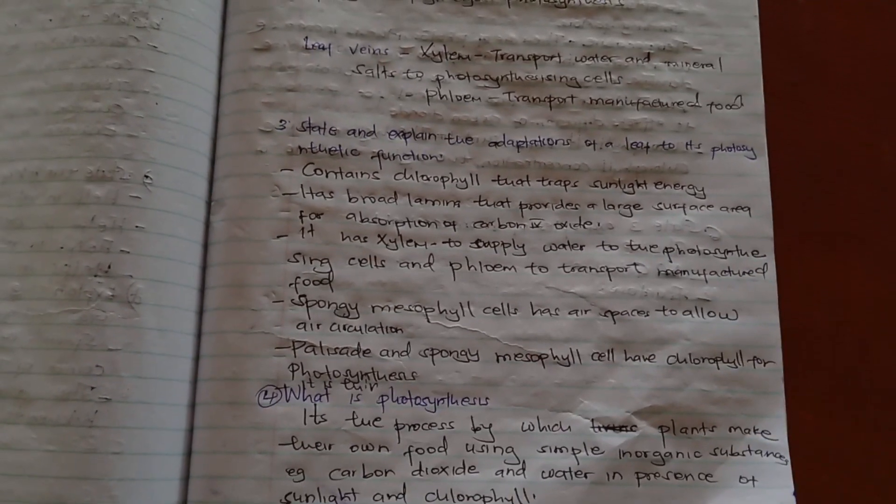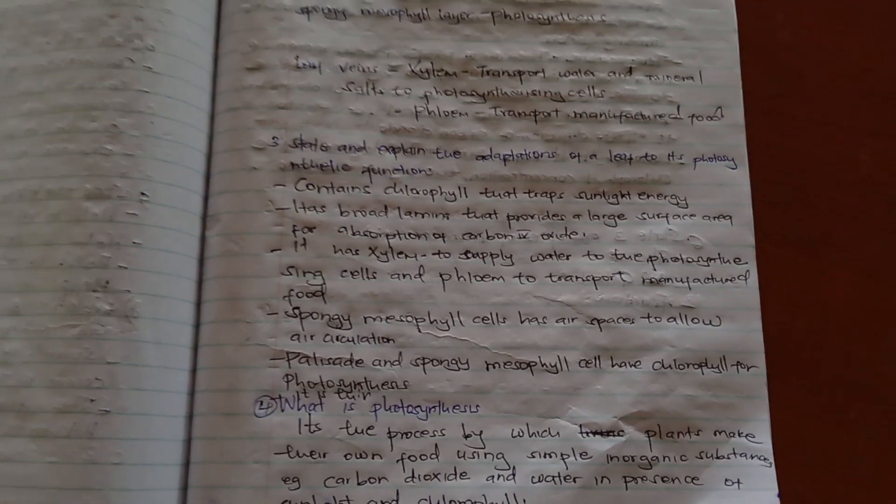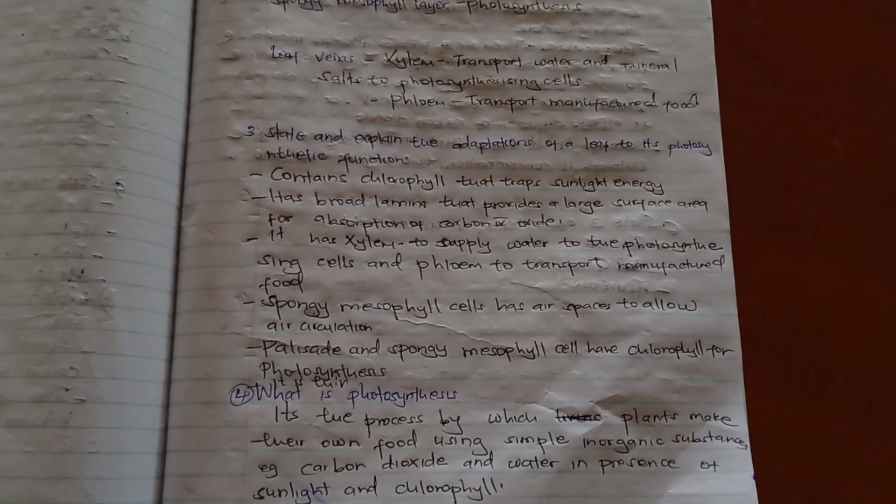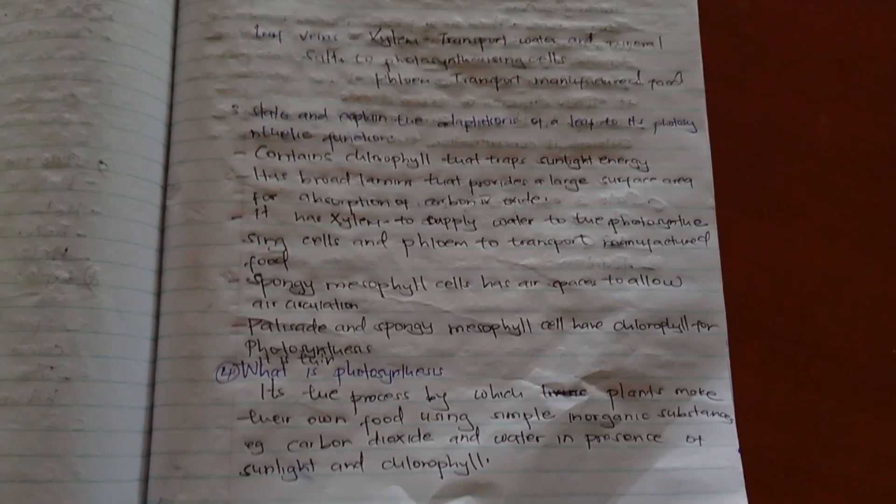The leaf has xylem vessels to supply water to the photosynthetic cells and phloem to transport manufactured food. It has spongy mesophyll cells that have air spaces that allow circulation of air, and the palisade mesophyll cells that have chlorophyll for photosynthesis.